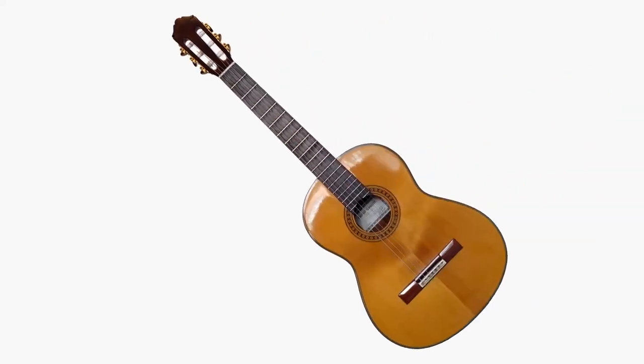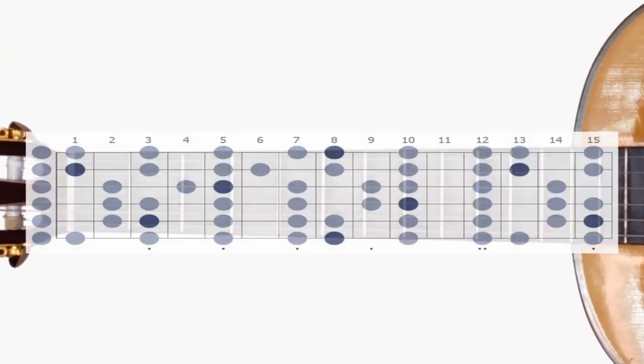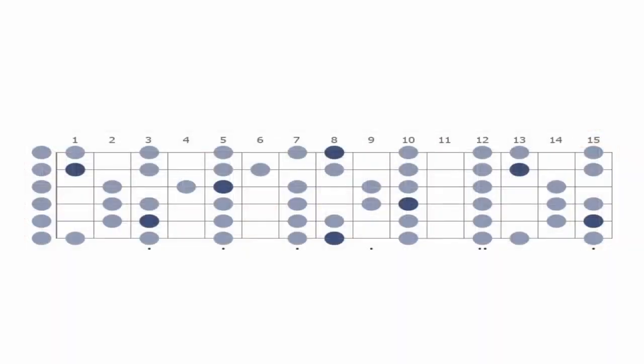If we look at the guitar, we can see a similar idea. Here are all of the notes available to us diatonically in the key of C major on the fretboard. You'll notice that all of the open strings E, A, D, G, B, and E are all accessible in C major and are not chromatic.